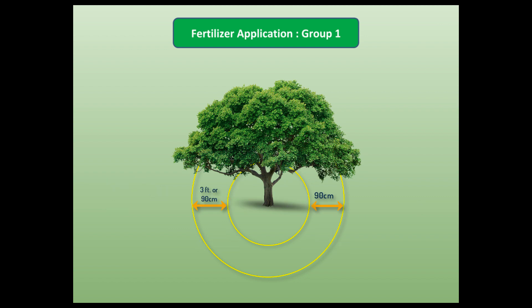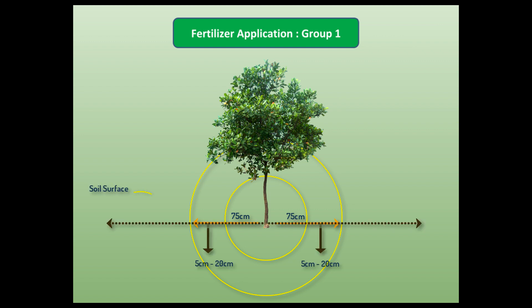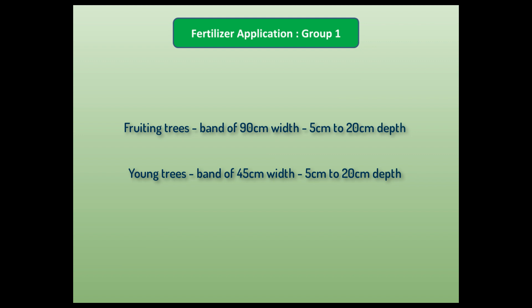This means a three-feet-wide band starting from 60 centimeters away from the trunk. In young Group 1 trees, the mouths are located starting at 30 centimeters from the trunk, spreading up to 75 centimeters, and 5 to 20 centimeters below the soil surface. So fertilizer must be applied in all directions in a band of 90 centimeters width for fruiting trees and 45 centimeters for young trees, placed 5 centimeters below the soil surface for both.